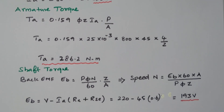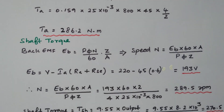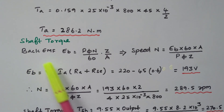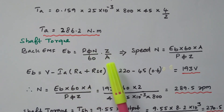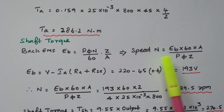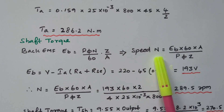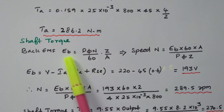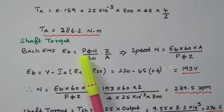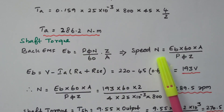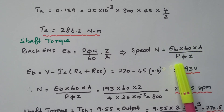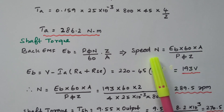Now we will find the shaft torque — the torque available at the shaft. Before that, we need to find the speed, because the shaft torque formula requires speed. The back EMF of a DC motor is E_B equal to phi times N divided by 60 times Z by A. By rearranging, the speed N equals E_B into 60 into A divided by P into phi into Z.